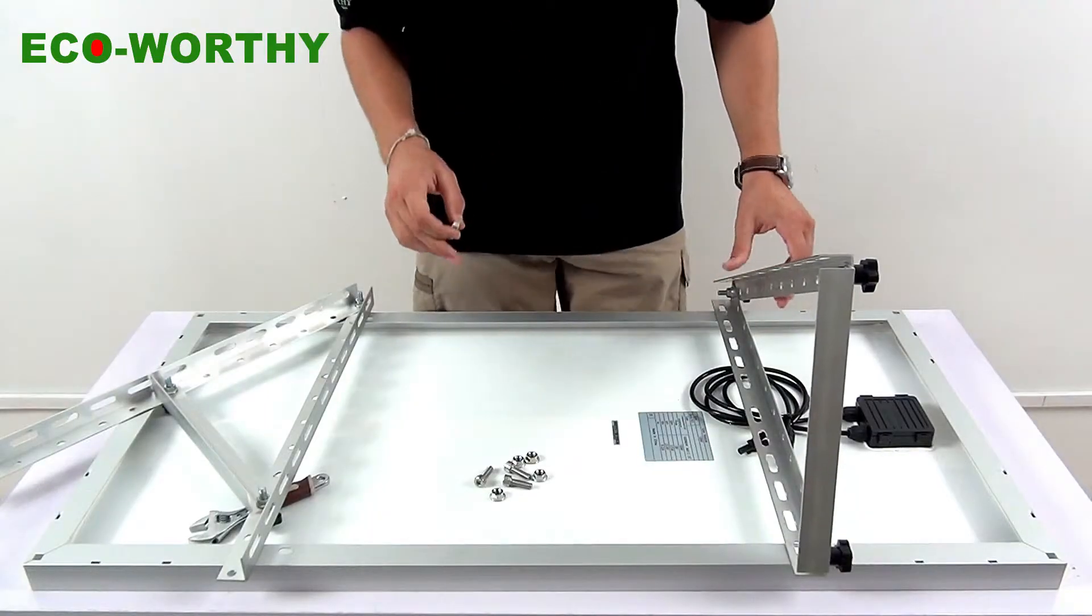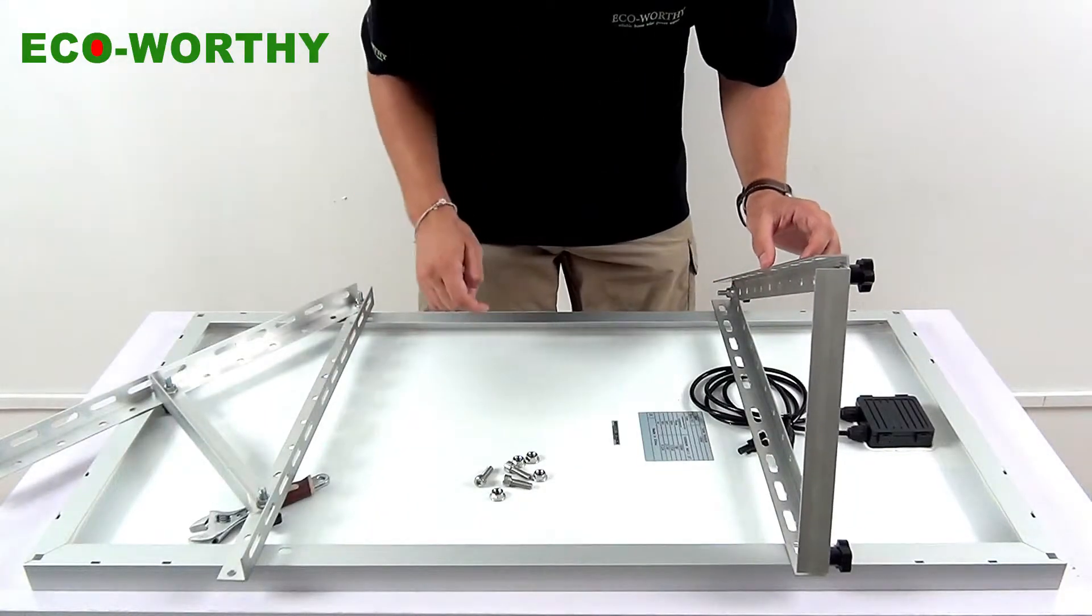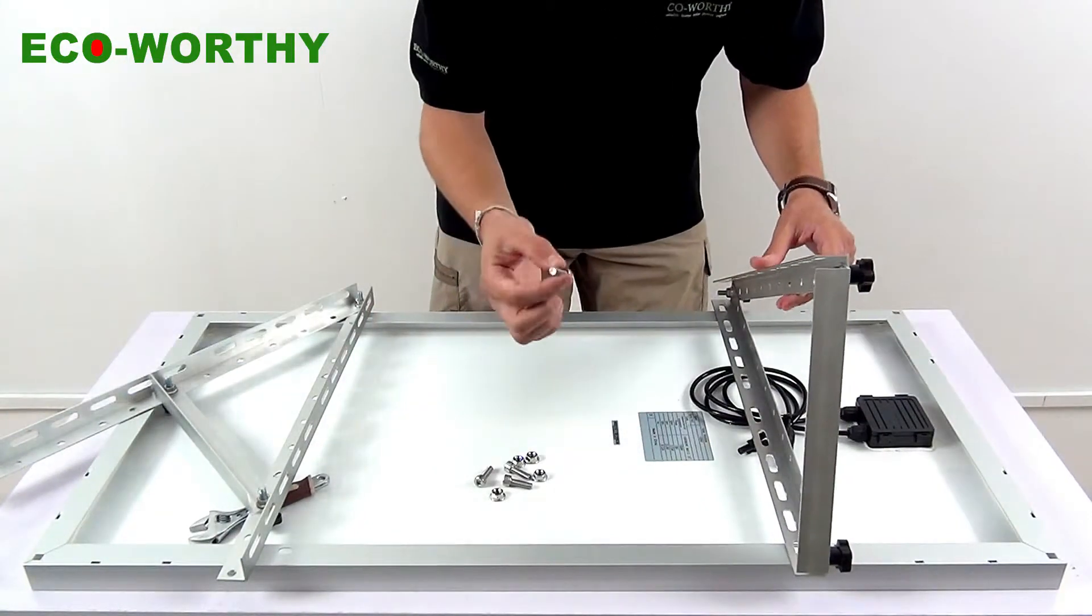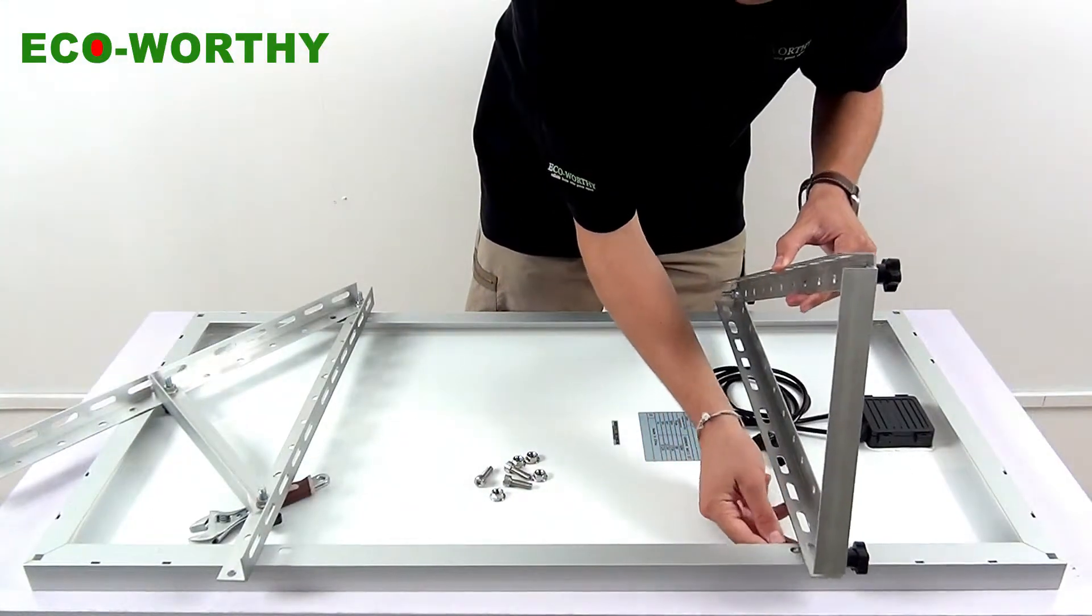Now we're going to connect these two sets of rails to the solar panel. Let's see how we do it. We have a screw here, so we put the screw in this hole.